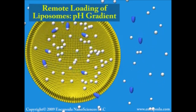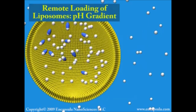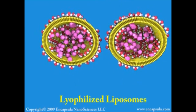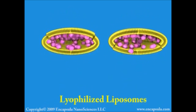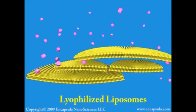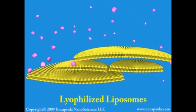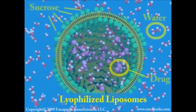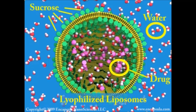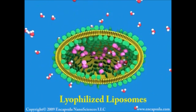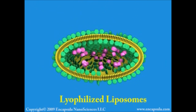Lipids organize into bilayers due to the presence of water. When the water is removed by lyophilization, the bilayer loses its structural integrity; after rehydration, the liposomes have a different size distribution and have leaked their entrapped contents. Some aqueous solutes such as sucrose can replace water at the lipid head group, thus maintaining the bilayer structure when water is removed. In this case, the liposome can be lyophilized and then rehydrated while retaining its original size and entrapped contents.